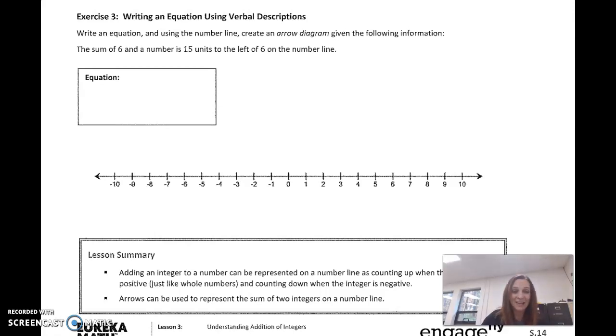So we have the sum. Remember, sum means we're going to add six and, that's where the plus sign comes. So six and a number is 15 units, to the left of six on the number line. Okay, so six and a number that is 15 units to the left of six.